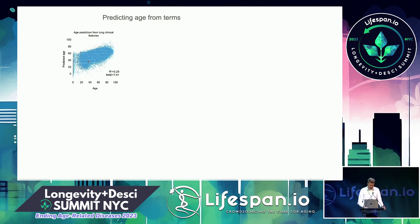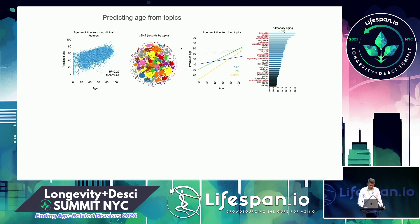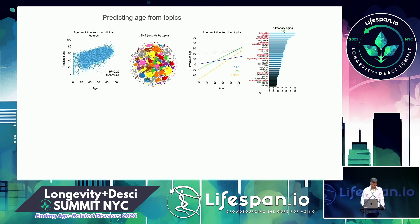We can predict age from terms using deep learning — it's a mean absolute error of 7.6 years, so not great but not terrible. To improve this we did topic modeling, seeing how different terms associate in topics and how topics contribute to aging. Some of the most strongly predictive topics include what we term pulmonary aging, featuring fibrosis and related features — things we already know, but found in an unbiased way.